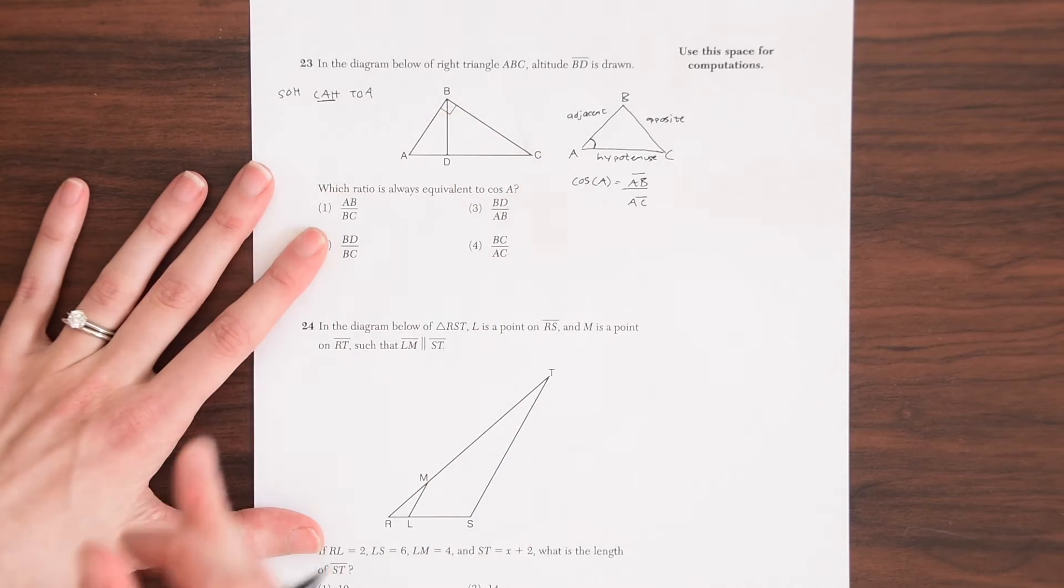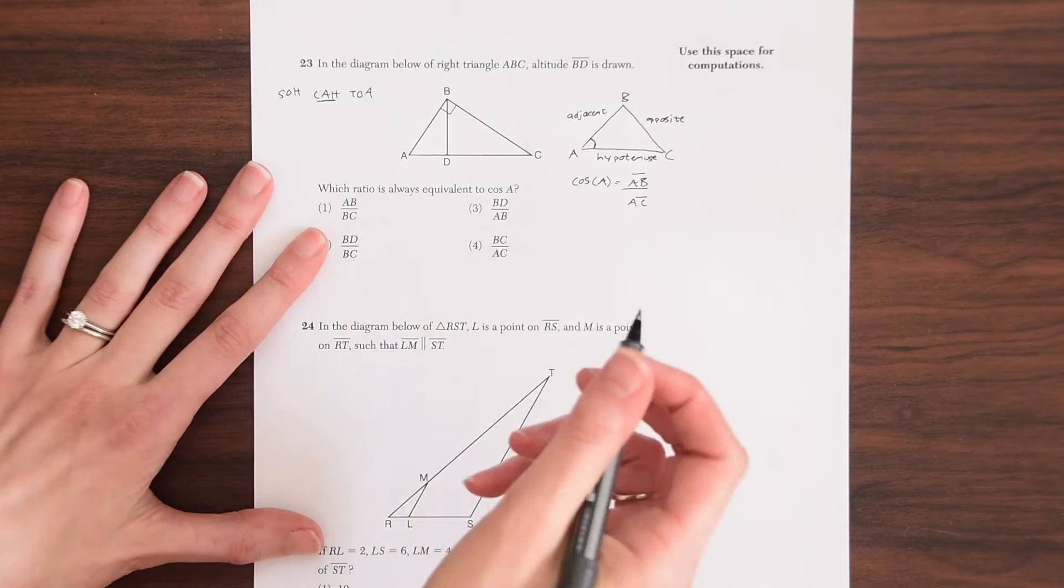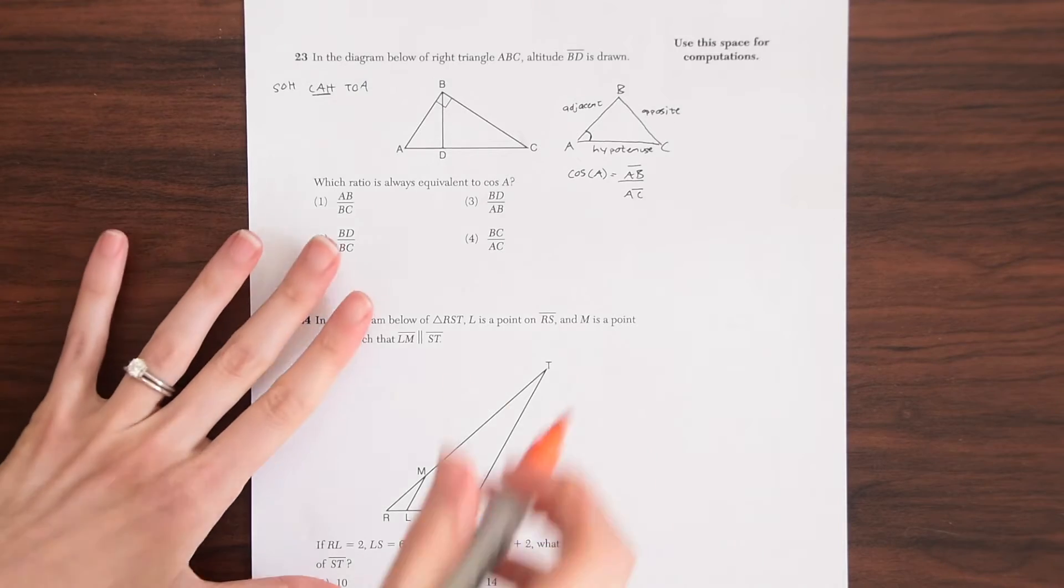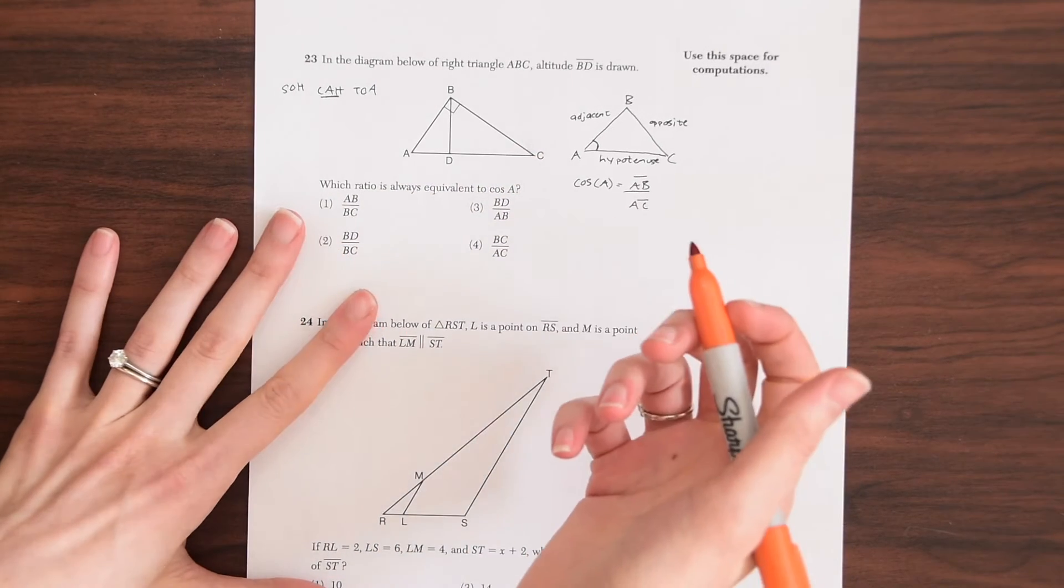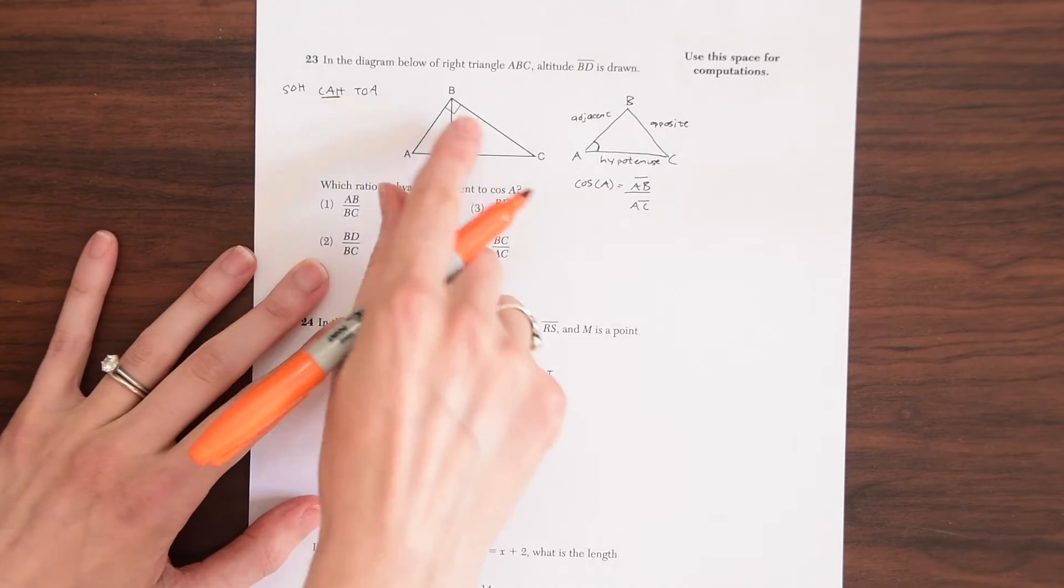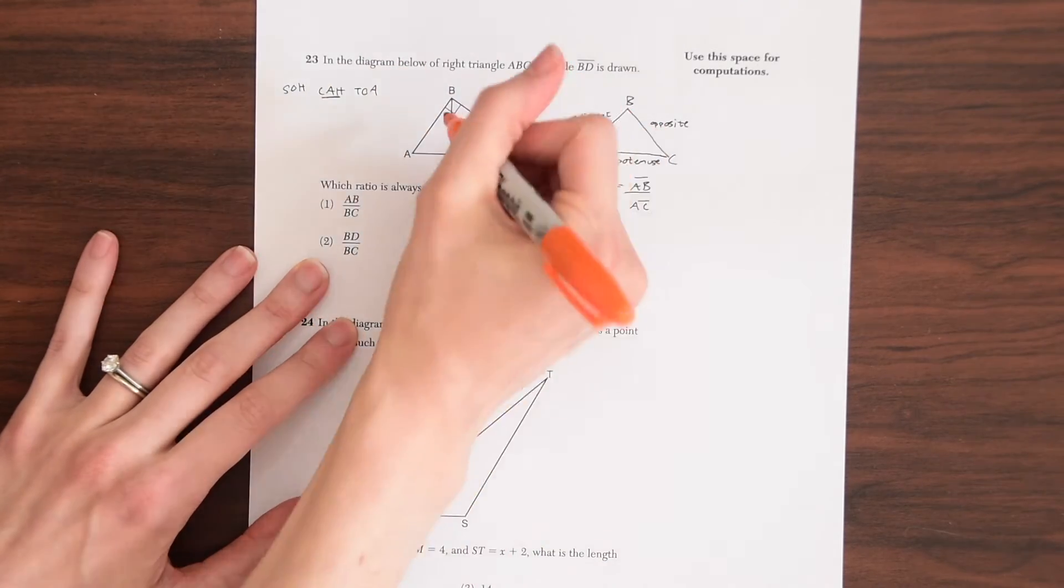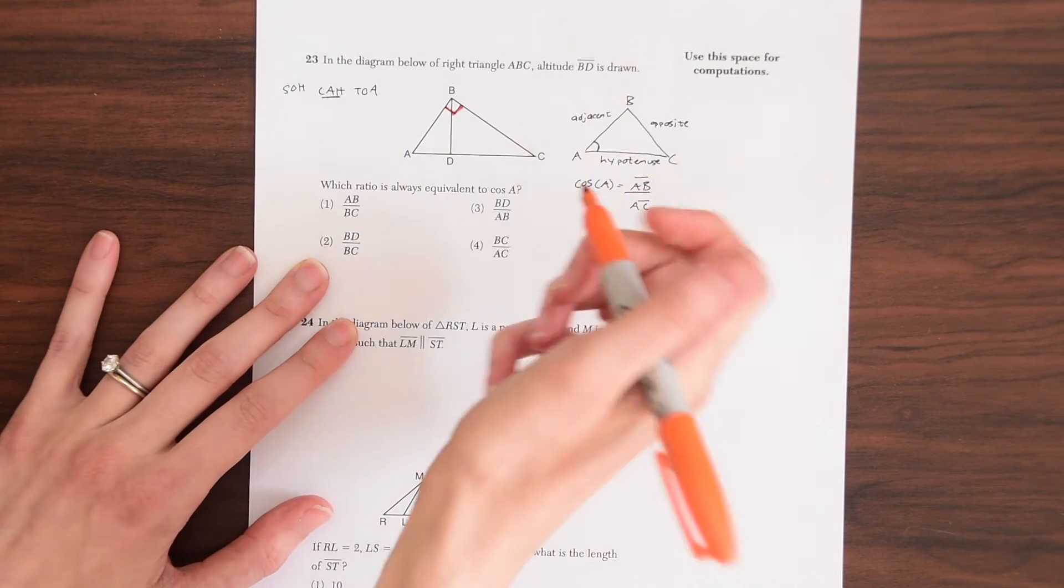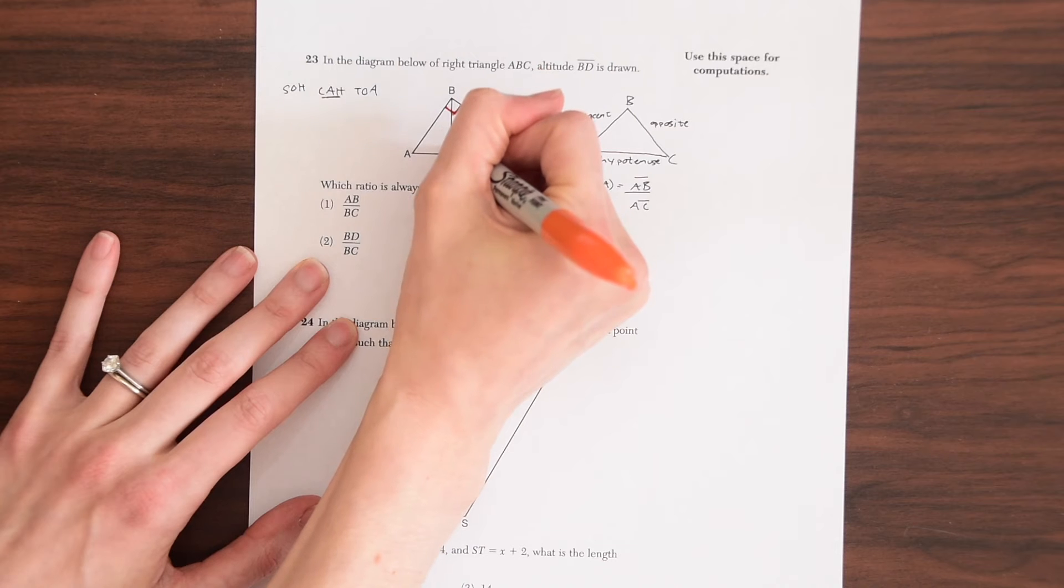So even though we have this triangle ABC, there's other triangles within this that are similar to each other. So we need to find that. We need to find the other similar triangle here to compare this to. And then we can go from there. So we have this right triangle ABC. So we know that this is a right angle. And then since an altitude is drawn, this is also going to be a right angle.